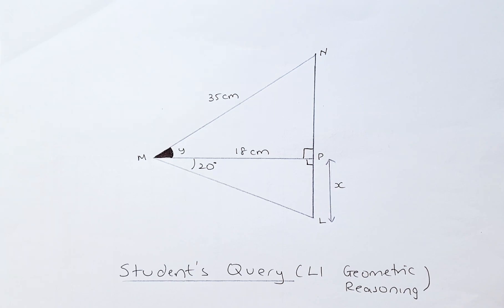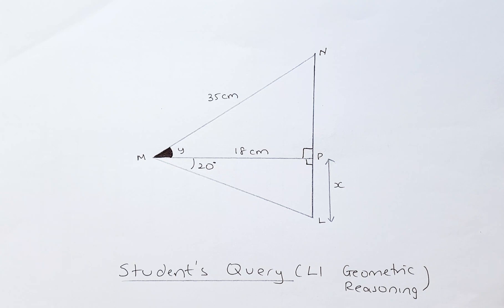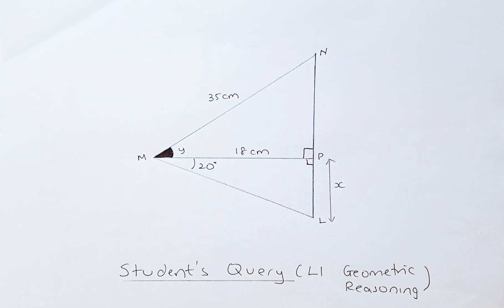Triangle MPN, where MN is 35 cm and MP is 18 cm, and you need to find angle Y. The second right-angled triangle is MPN, where you are going to find PN, also called X, and you know that MP equals 18 and the angle PMN is 20 degrees. So what we need to do,